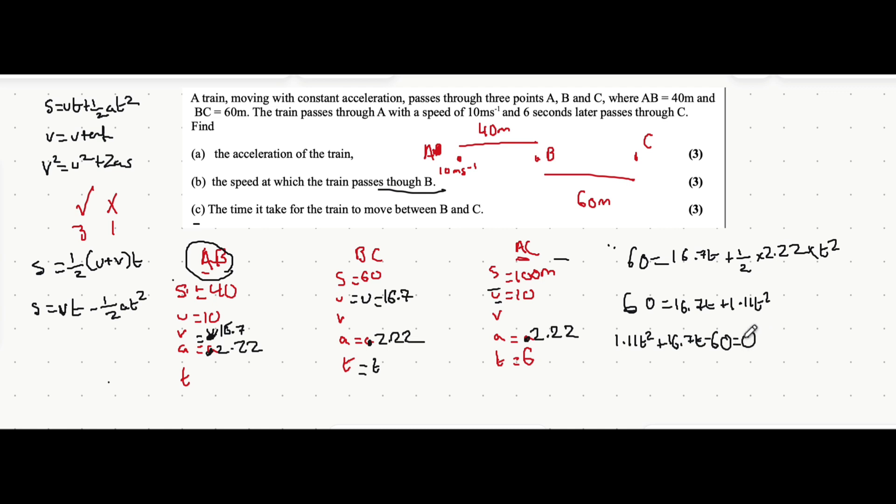From here you'd use the quadratic formula: minus b plus or minus square root of b² minus 4ac, all over 2a. You'll be able to get to the right answer from here. Hopefully that made sense, and if you have any questions please let me know in the comments. Thanks for watching.